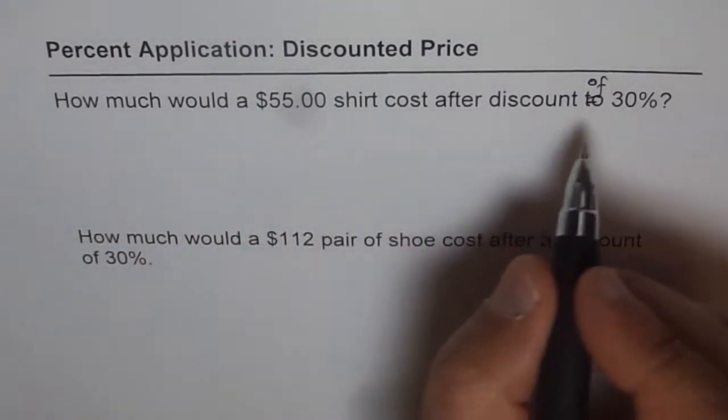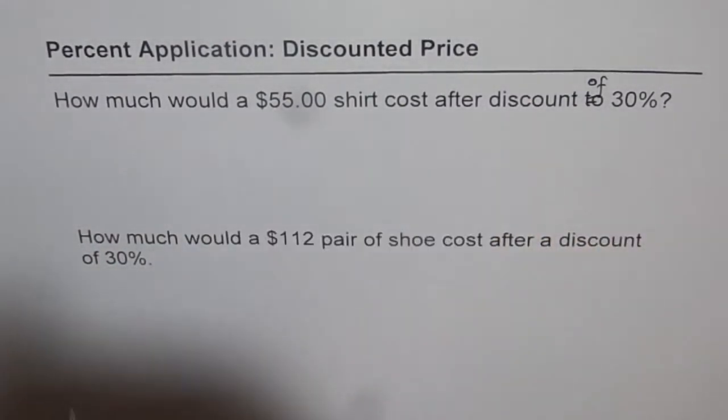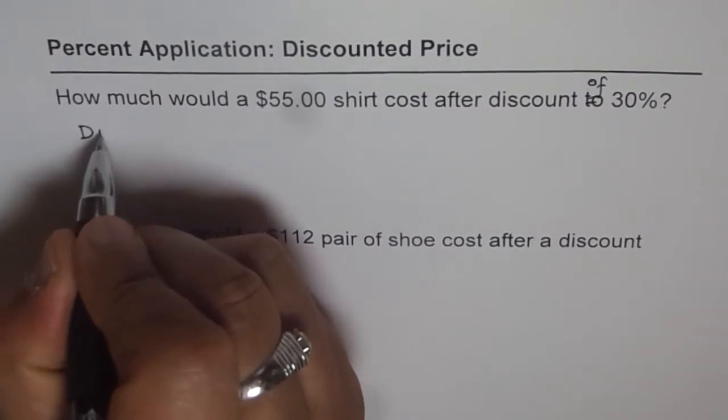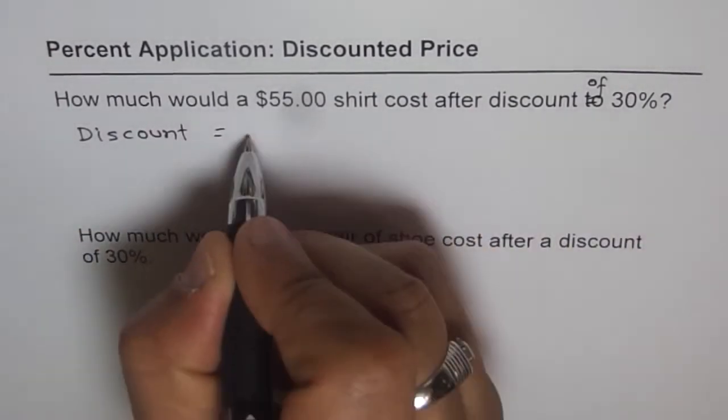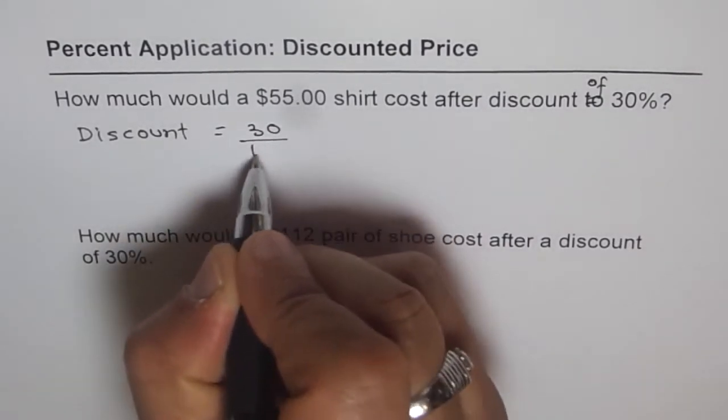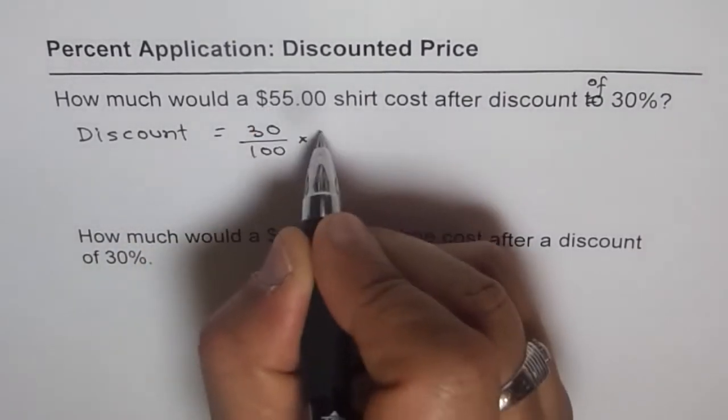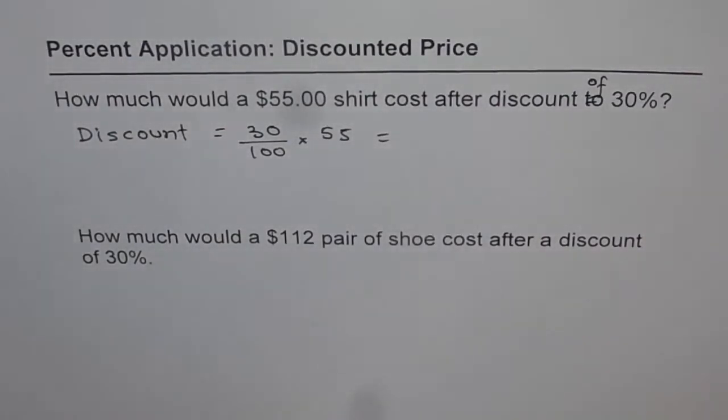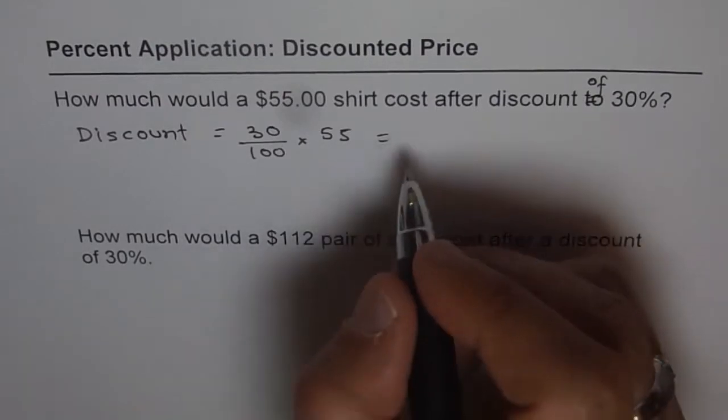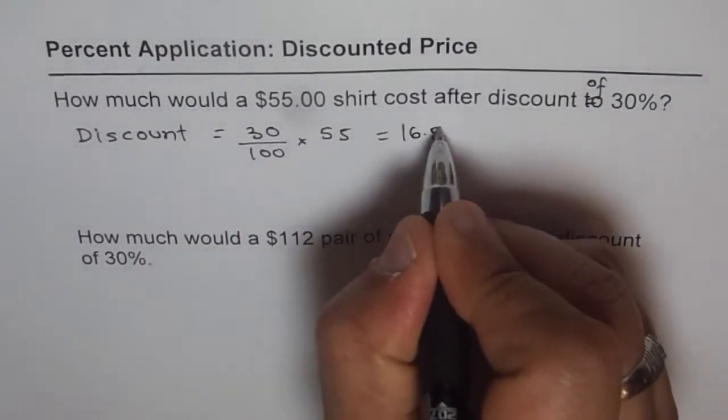It's 30% of 55. We can write this as: Discount equals 30%, that is 30 over 100 times 55. Use a calculator to calculate it. We have 30 divided by 100 times 55 and you get a value of 16.50. Just 16.50.